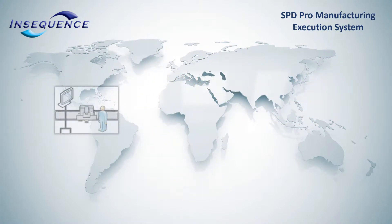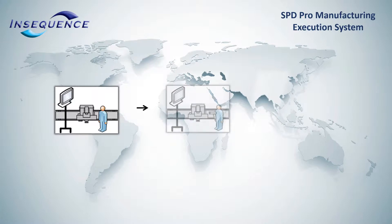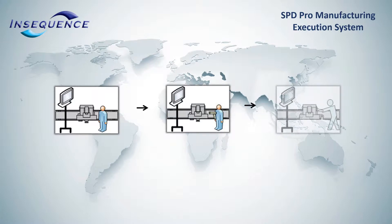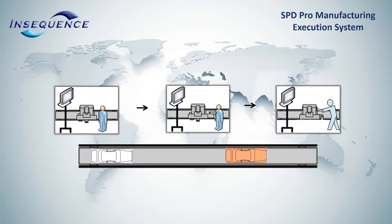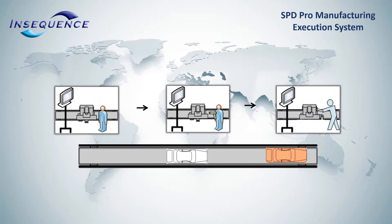The purpose of the MES system is to manage and control your operation and ensure that product is produced with the highest possible quality and traceability, all the while reducing the number of defects, scrap, downtime, and lost productivity.